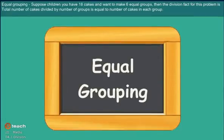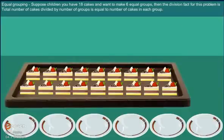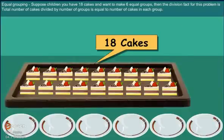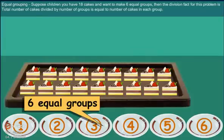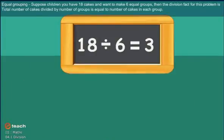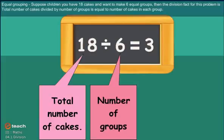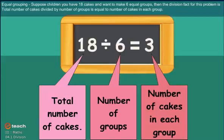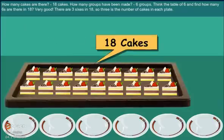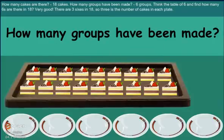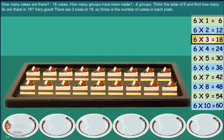Equal grouping. Suppose you have 18 cakes and want to make 6 equal groups. The division fact of this problem is: total number of cakes divided by number of groups equals number of cakes in each group. There are 18 cakes. Think of the table of 6 — how many 6s are there in 18?